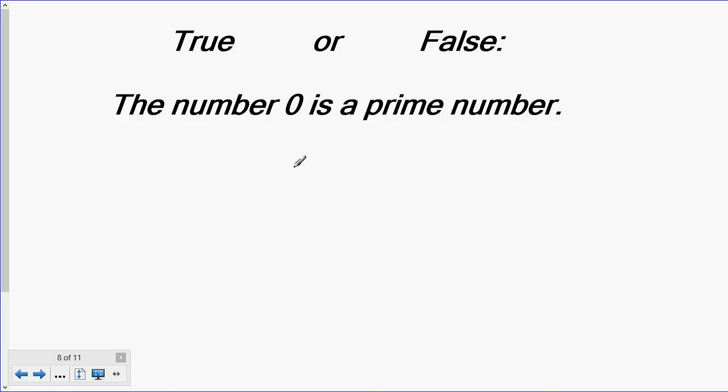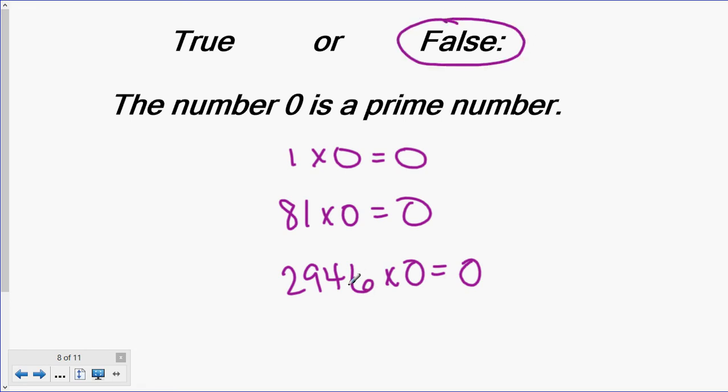What about 0? Is 0 a prime number? Does 0 only have 2 factors? 1 times 0 is 0, but 0 has a lot more factors. In fact, 0 has an infinite number of factors, because anything times 0 is 0, according to that 0 property of multiplication. For example, 81 times 0 is 0. So that means 81 is a factor of 0. So 0 has infinite factors. Therefore, it doesn't fit the definition of prime, because the prime number only has two factors.